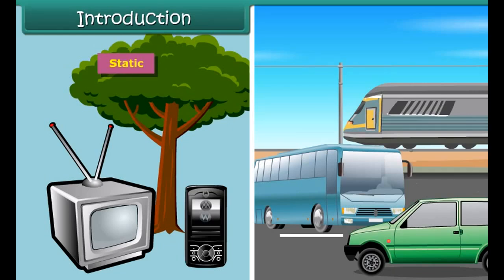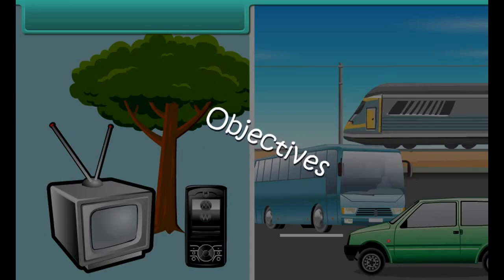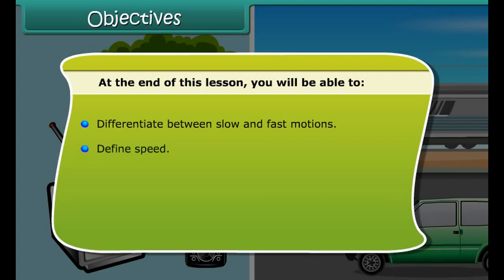In other words, their position does not change with time. Such objects are said to be at rest, whereas objects such as cars, buses, trains, etc. are non-static. It means that their position changes with time. Such objects are said to be in motion. Let us discuss motion and time in greater detail in this lesson.